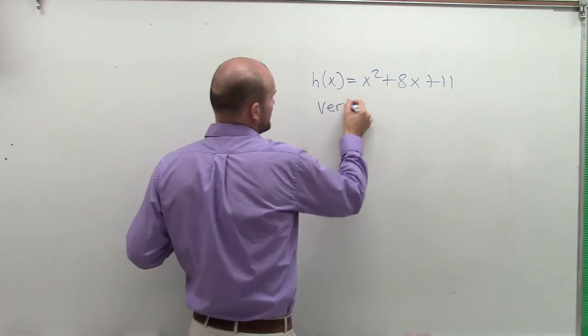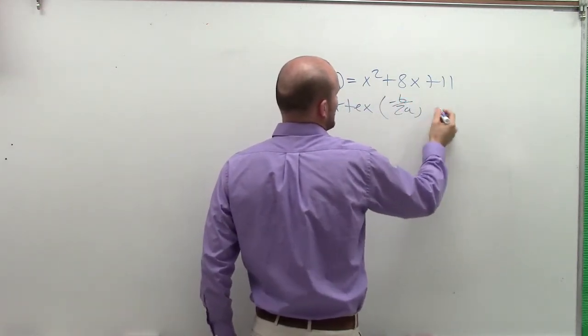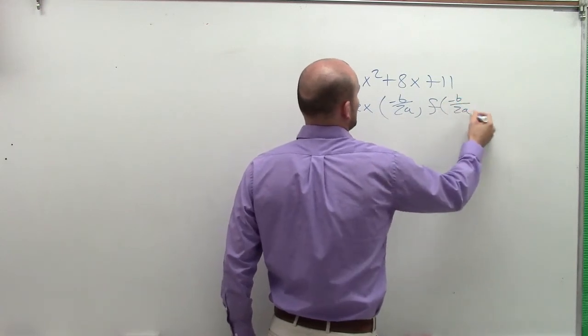So what we can do is use the formula for vertex. The formula for vertex is opposite of b divided by 2a, comma, f of opposite of b divided by 2a.